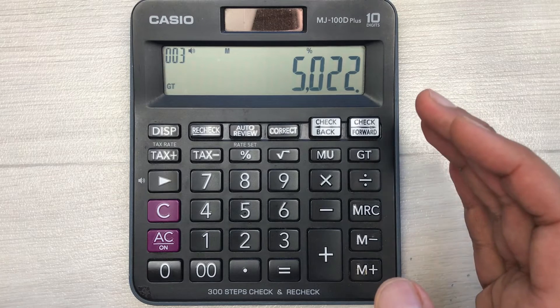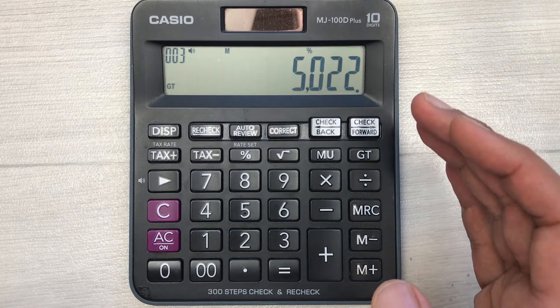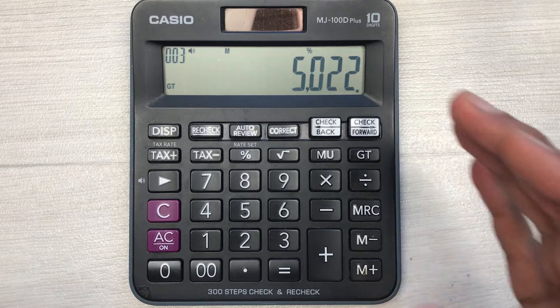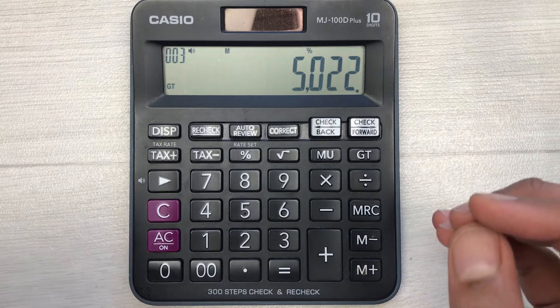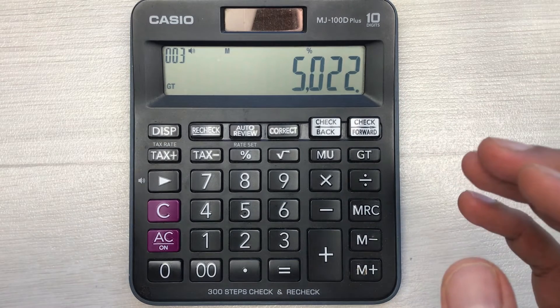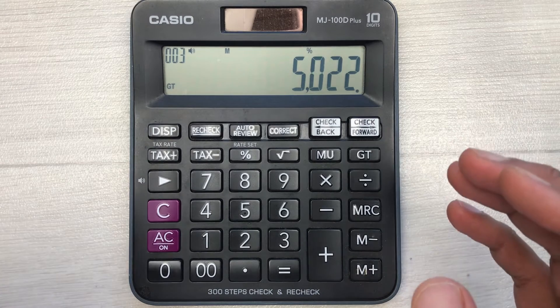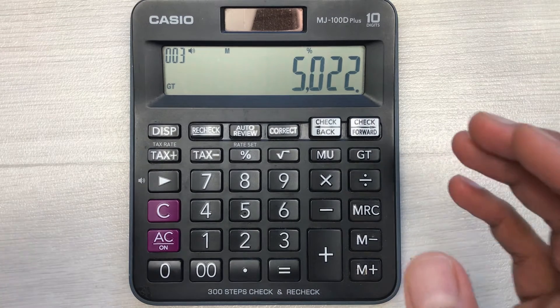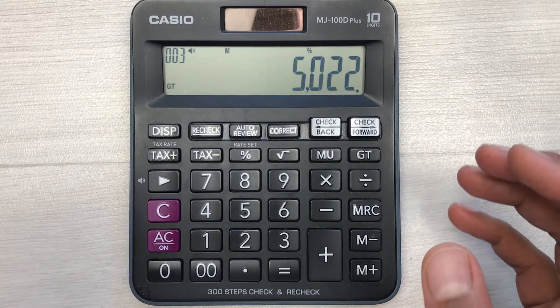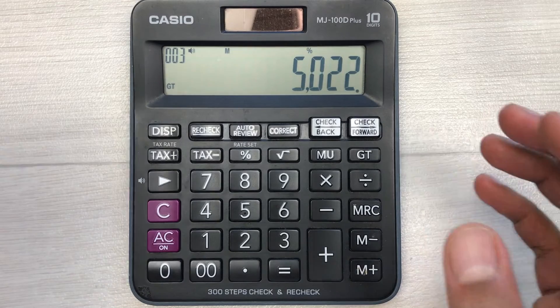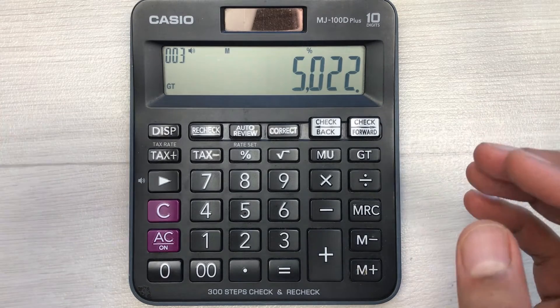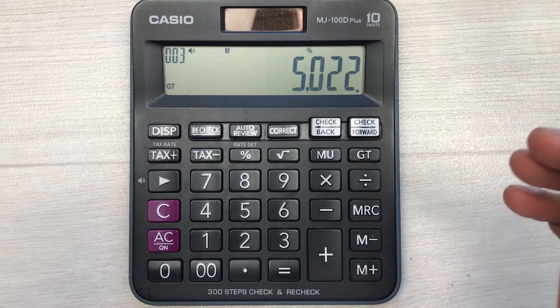After 40% discount, you have to pay 5,022. Why did I multiply it with 60? Because our total percentage is 100 and the discount is 40%, so 100 minus 40 is equal to 60. That is why I directly multiply it with 60 to get our final answer.